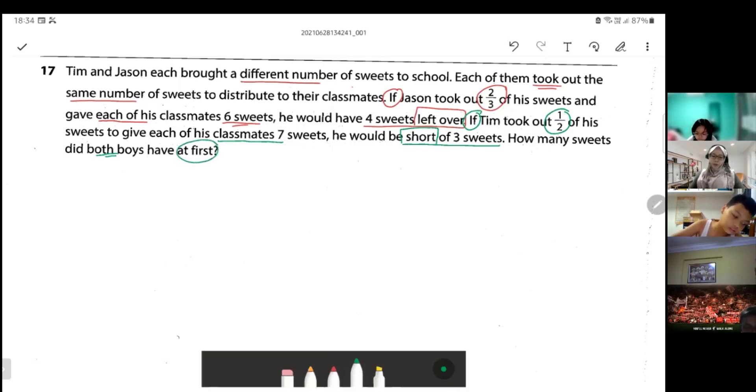So we have this information now. I want you all to focus on the part where they start to say if until here. If Jason took out two-thirds of his sweets and gave each of his classmates six sweets, I am going to let the number of sweets be units.